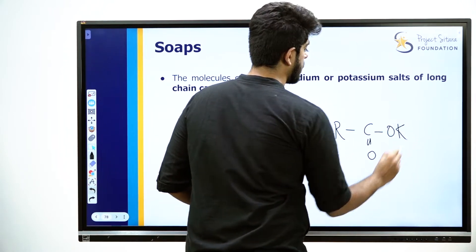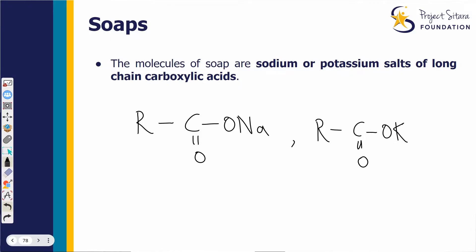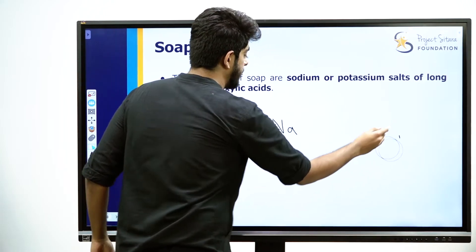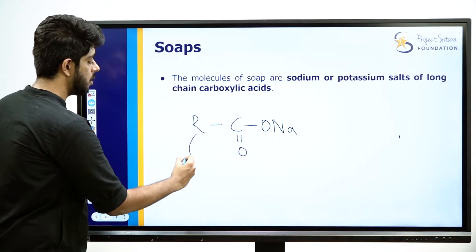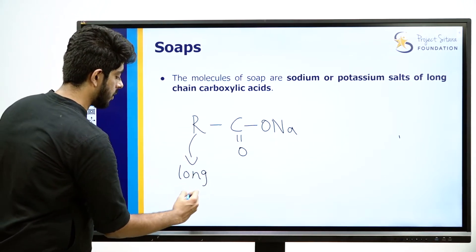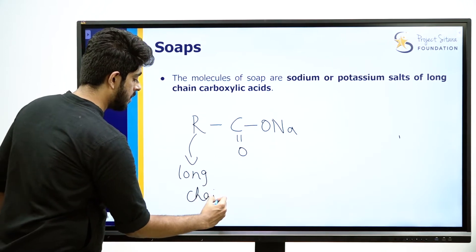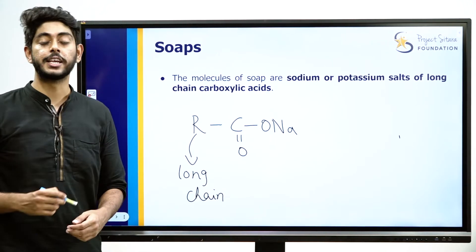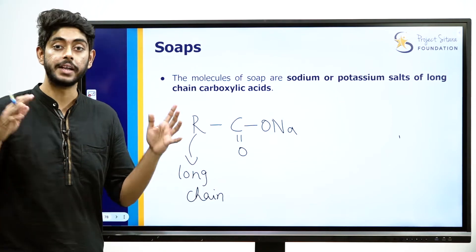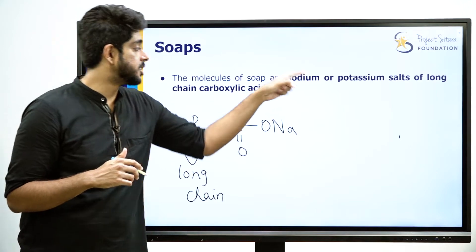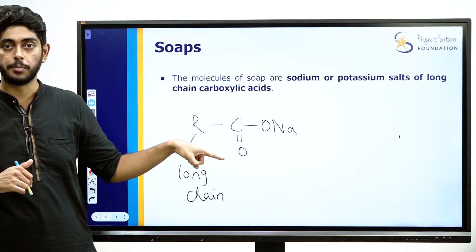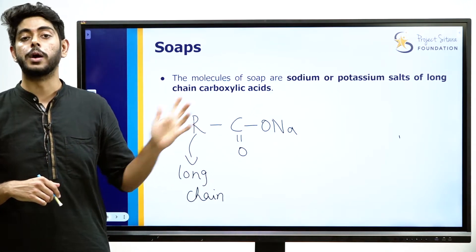This is the potassium salt — the soap molecule. This is the carbon chain, the long chain. Long chain has the same carbon atoms — 17. This is the salt of carboxylic acid. This is the soap molecule.